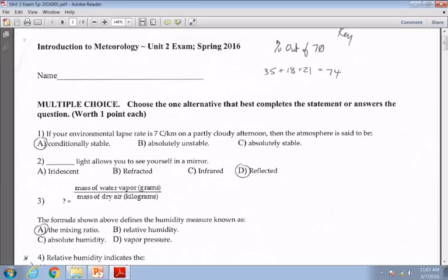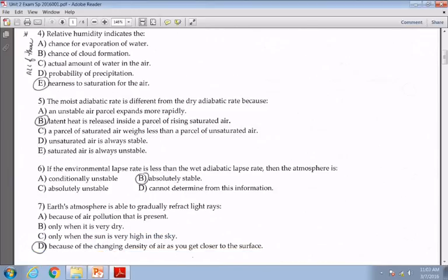Question number four was one of the two that whatever you put, I counted it right, because I was doing the answer key and I'm like, I don't know, they all sound pretty right to me. So actually, according to your textbook, E is the right answer. Relative humidity indicates the nearness of saturation, the nearness the air is to being saturated. Question number five, the moist adiabatic rate is different from the dry because of B, latent heat released, latent heat of condensation.